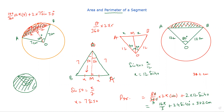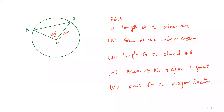So this is how you are going to find the perimeter of a shaded part. Let me give you some more questions. There is a circle with center O, radius 12, and there is an angle of 120 degrees. Find the length of the minor arc, find the area of the minor sector, find the length of the chord AB, find the area of the major segment, and then find the perimeter of the major segment. I have given you so many parts so that you will make yourself clear about the difference between the sector and the segment.